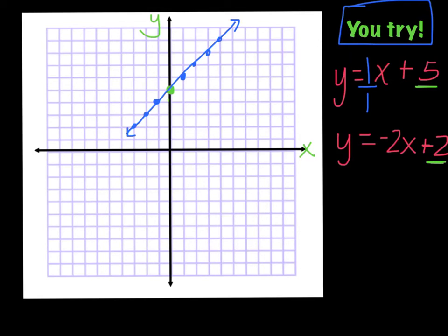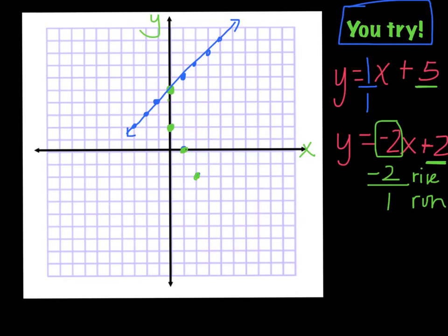The second equation has y-intercept two, so I'll put that on there. The slope is negative two, or negative two over one — it's rise over run, so I go down two over one. From that point, down two over one; down two over one. If I keep going down it won't cross, so I'd better go opposite — up two over one. I'll do a few more points, then connect my line.